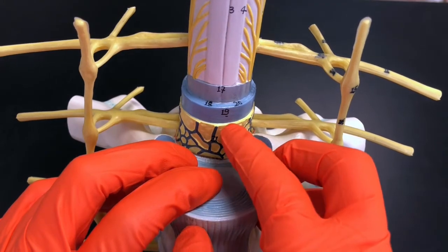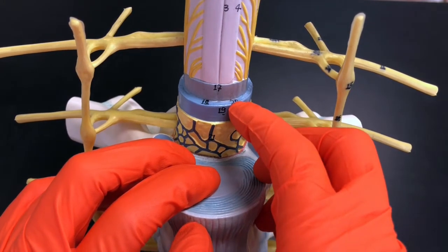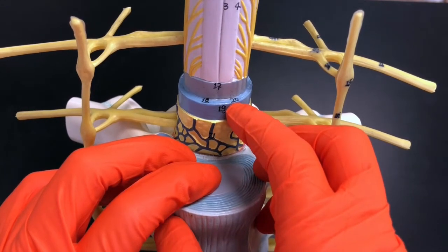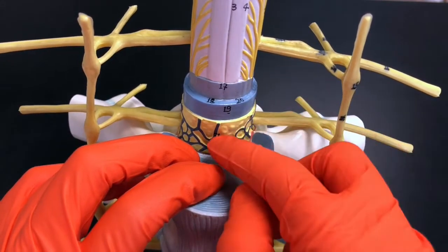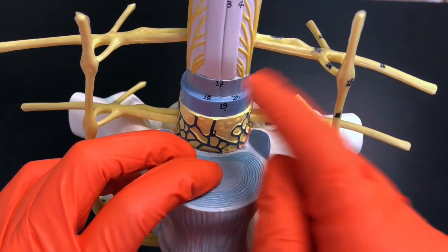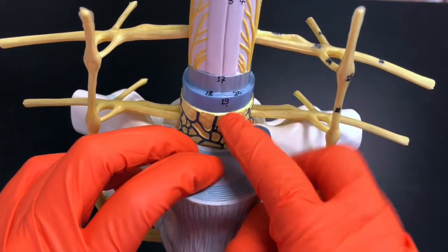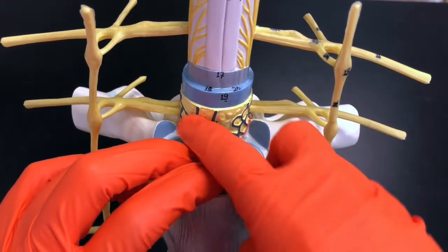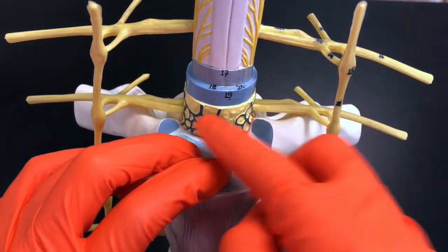The space between the dura mater and the arachnoid mater is called the subdural space. Again, 'sub' means below, so it would be the space underneath the dura mater. The space on the outside of the dura mater is what we call the epidural space.